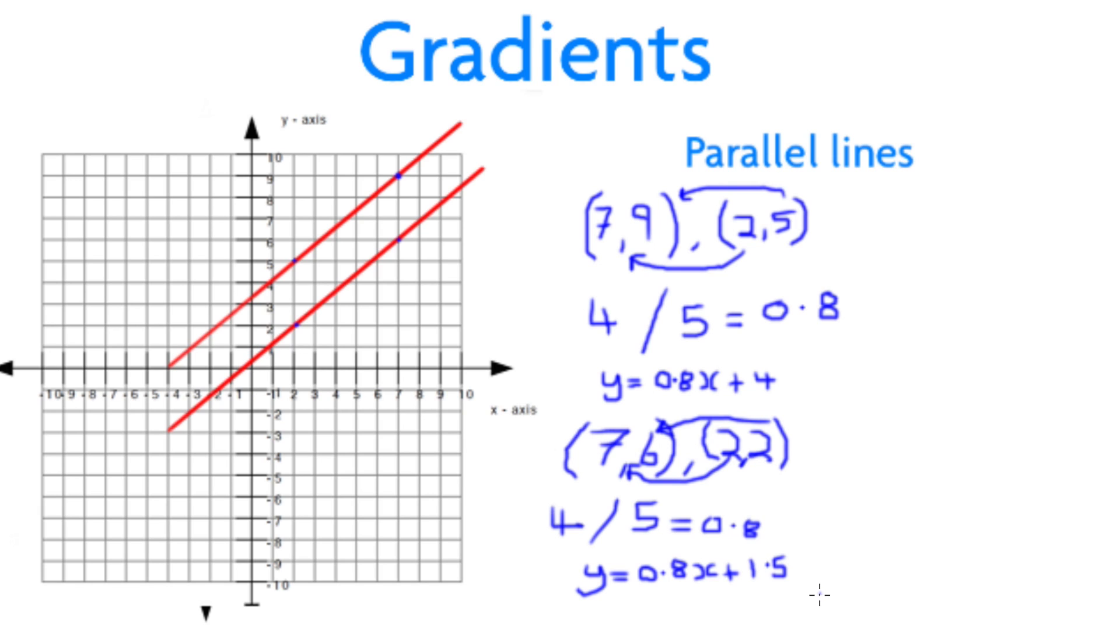So, even if you use completely obscure coordinates for each of your gradients, you should find that the equation for the line will be exactly the same for the y equals x part of the equation, and the final additional part of the expression will be different as the lines will have to cross at different points for them to be parallel.